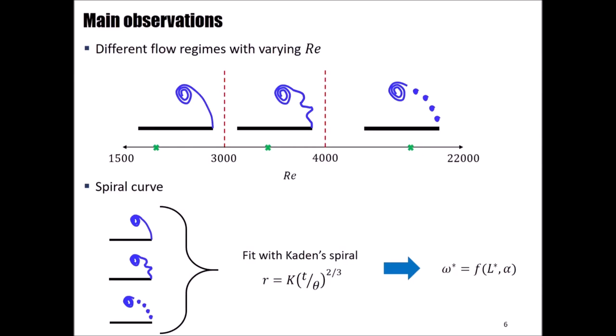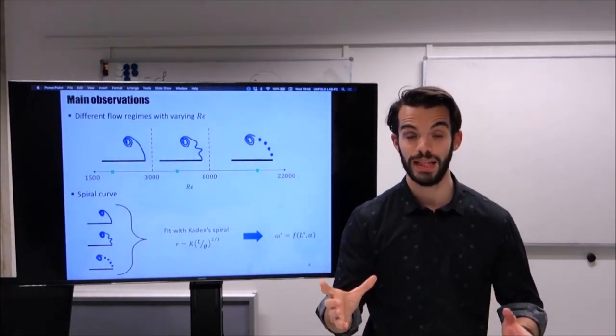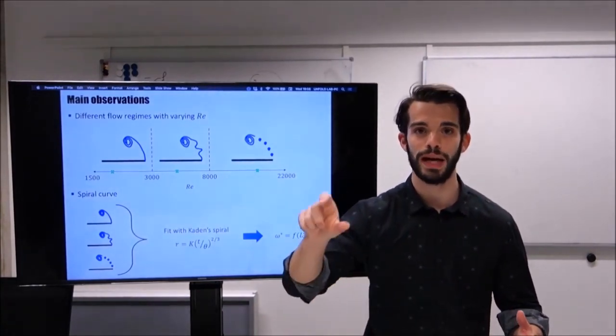For this reason, as you could see from the animations before, we overlap the Kaden spiral that has this equation in polar coordinates to the vorticity field, with the aim of computing the dimensionless vorticity along the spiral in time. Before showing the results, the next step is to understand how we track the dimensionless vorticity over time.